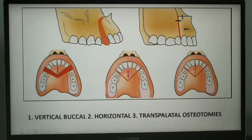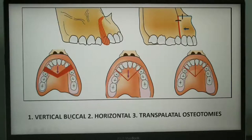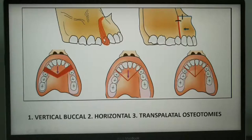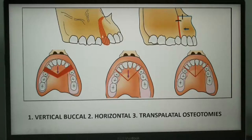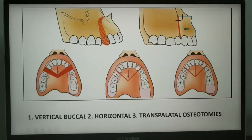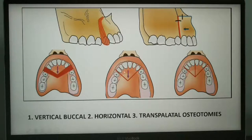Before discussing each technique in detail, let's have a general understanding of how anterior maxillary osteotomy is performed. The anterior maxilla can be mobilized with two vertical buccal osteotomies, one horizontal osteotomy, and a transpalatal osteotomy. One vertical buccal osteotomy is performed on each side of the maxilla through the extraction socket of the first premolar. This is followed by a horizontal osteotomy, which is a medial extension of the vertical osteotomy towards the piriform fossa on either side. The third is a transpalatal osteotomy across the palate at the first premolar region.